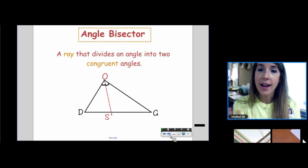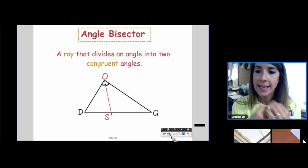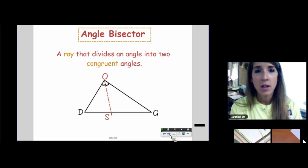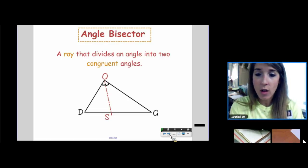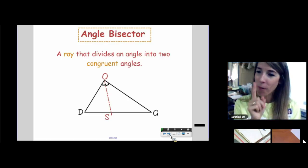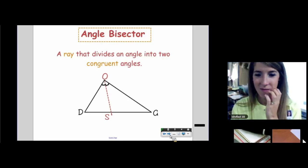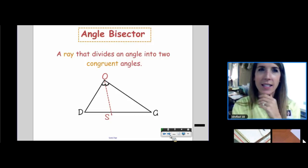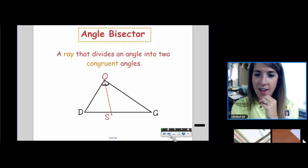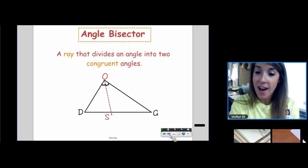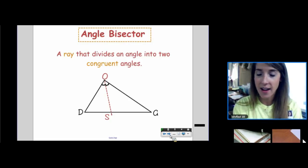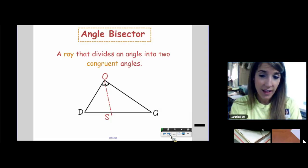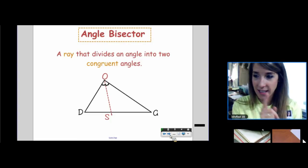Now, when you draw an angle bisector in a triangle, let's say that angle bisector OS, do you bisect the side as well? Do you cut DG in half as well as angle O? Always, sometimes, or never. If an angle bisector cuts an angle in half, then it cuts the opposite side in half. Always, sometimes, or never. You're saying sometimes. What do you think are the times when it would cut the opposite side in half? Equilateral, isosceles, great guesses.